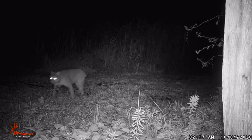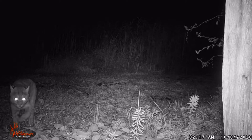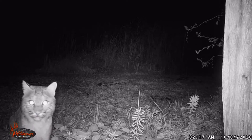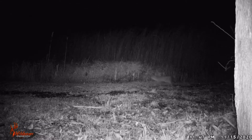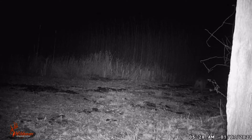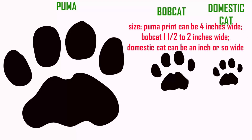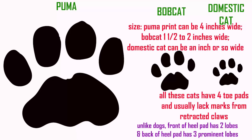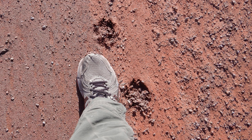The best way to distinguish between the footprints of a puma, a bobcat, and a domestic cat would be size. A puma print could be four inches wide, that of a bobcat one and a half to two inches wide, while a domestic cat can be about an inch in width. All of these cats have four toe pads and usually lack claw marks because they are retracted. Here you can see my foot next to puma paw prints in Petrified Forest National Park. The puma came in the vicinity of our tent during the night but did not bother us.